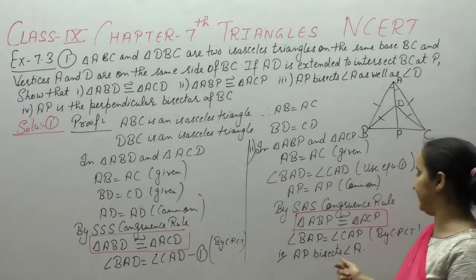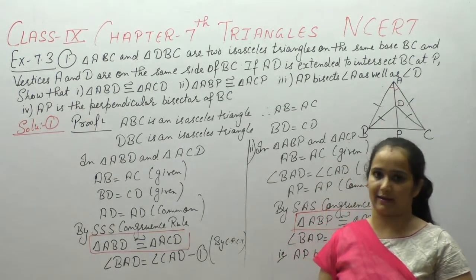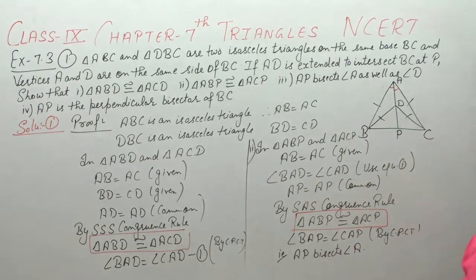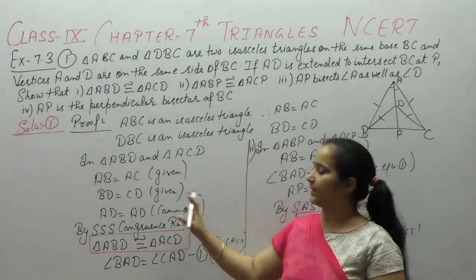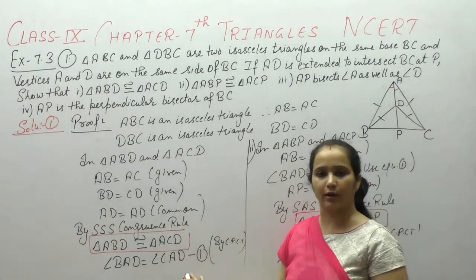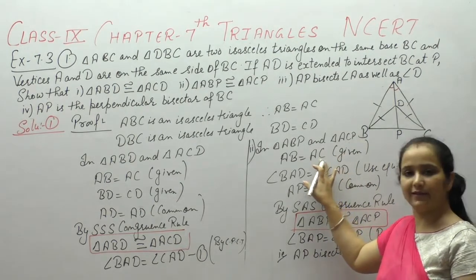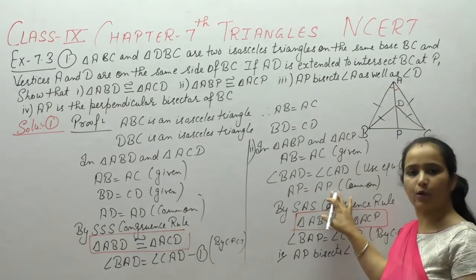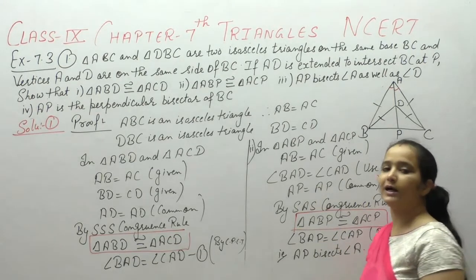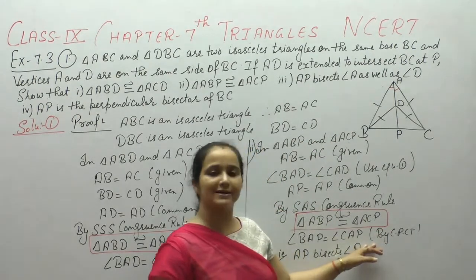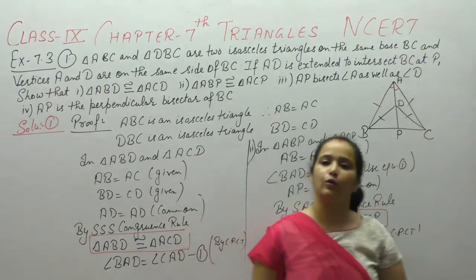Now for the second part, we need to prove triangle ABP is congruent to triangle ACP. AB equals AC (given), angle BAD equals angle CAD from equation 1 (included angle), and AP is the common side. So by SAS congruence rule, triangle ABP is congruent to triangle ACP. Therefore angle BAP equals angle CAP by CPCT, which means AP bisects angle A.